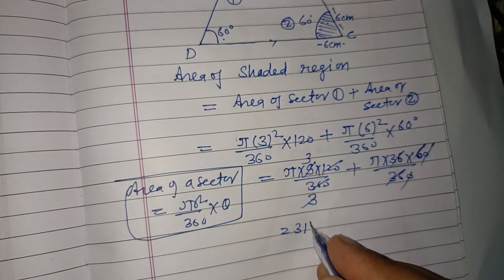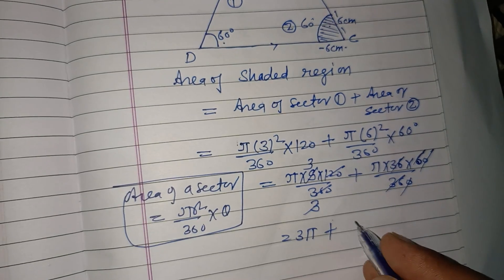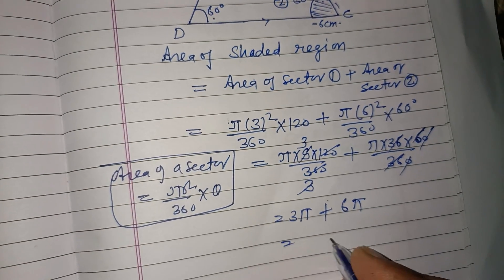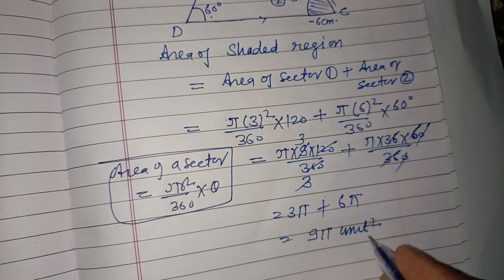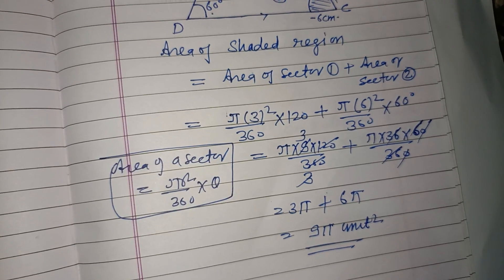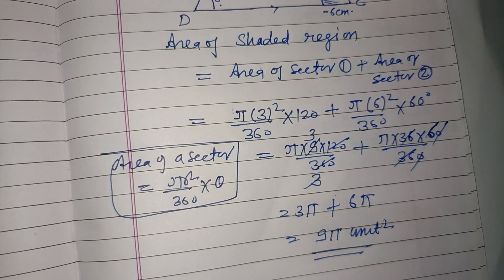This gives us 3π and this is 6π. So, 3π plus 6π equals 9π square units, which is the area of the shaded region.